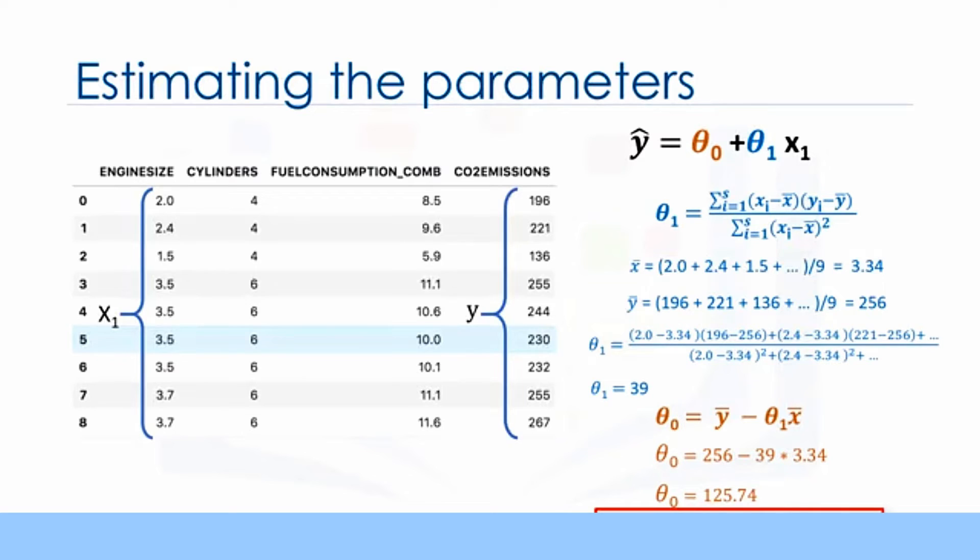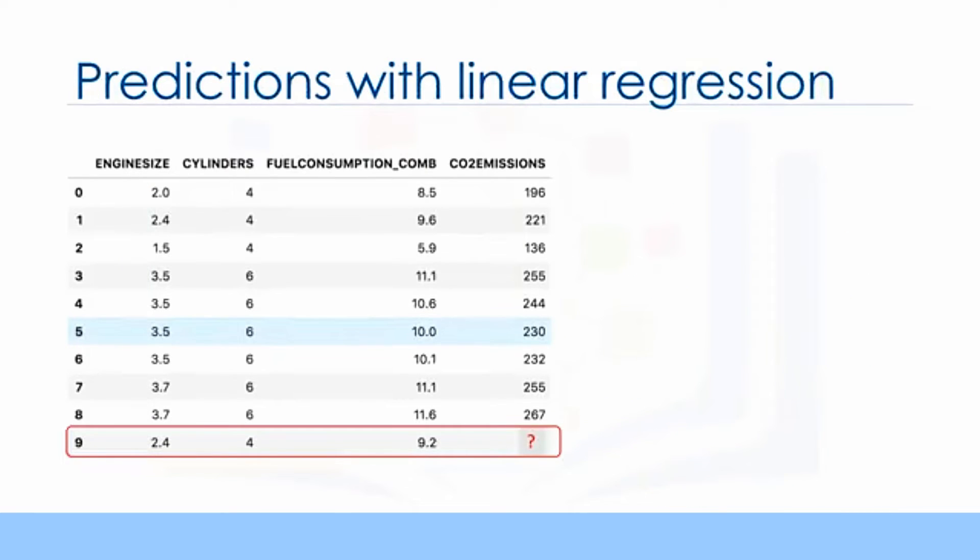Now, the question is, how can we use it to predict the emission of a new car based on its engine size? After we found the parameters of the linear equation, making predictions is as simple as solving the equation for a specific set of inputs. Imagine we are predicting CO2 emission, or Y, from engine size, or X, for the automobile in record number 9. Our linear regression model representation for this problem would be Y hat equals theta 0 plus theta 1 X 1. Or, if we map it to our dataset, it would be CO2 emission equals theta 0 plus theta 1 engine size. As we saw, we can find theta 0, theta 1 using the equations that we just talked about. Once found, we can plug in the equation of the linear model.